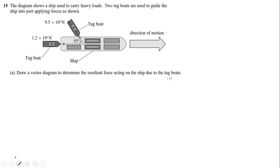Question 15 is all about a scale vector diagram. The diagram shows a ship used to carry heavy loads, and two tugboats are used to guide the ship into port by applying forces. Tugboat one applies a force of 9.5×10⁴ N at 55 degrees to the horizontal, and tugboat two applies 1.2×10⁵ N as a horizontal force in the direction of motion.